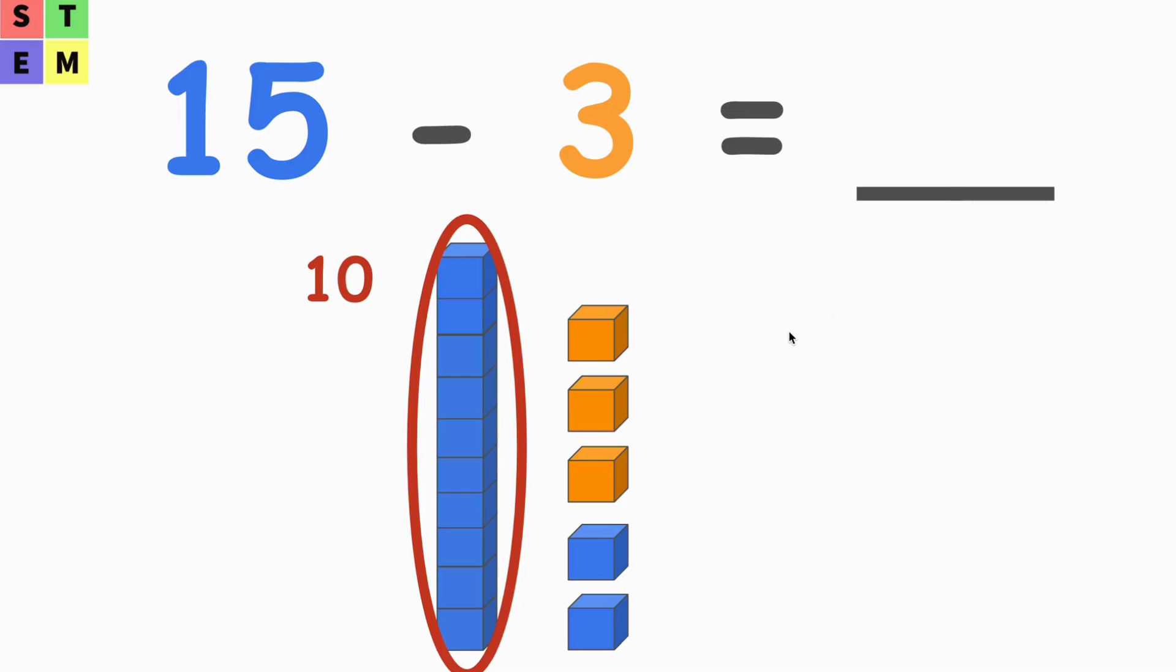Let's take a look at the blocks here. So we got 10 blocks here and we got 5 blocks here, so in total we got 15 blocks. Let's count: 1, 2, 3, 4, 5, 6, 7, 8, 9, 10. So we got 10 blocks here, plus 1, 2, 3, 4, 5.